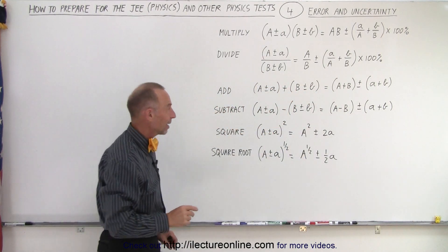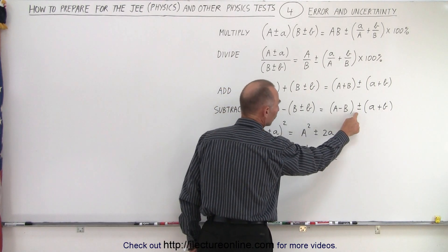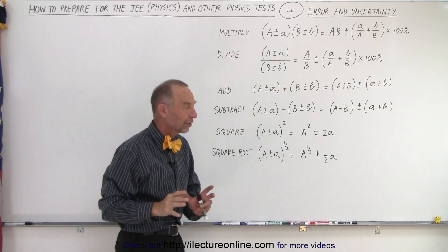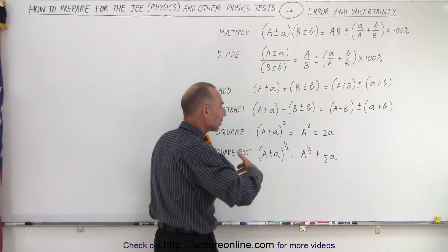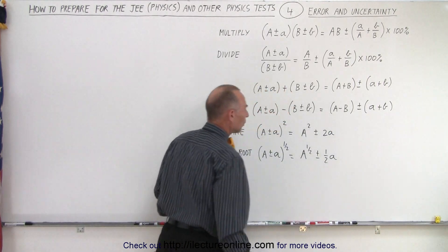If we subtract, we do exactly the same thing. A minus B is the answer you get, but the uncertainty will be the sum of the two, not the difference of the two, just like with addition, because we need to make sure that we include all the possible answers with this uncertainty when we subtract.